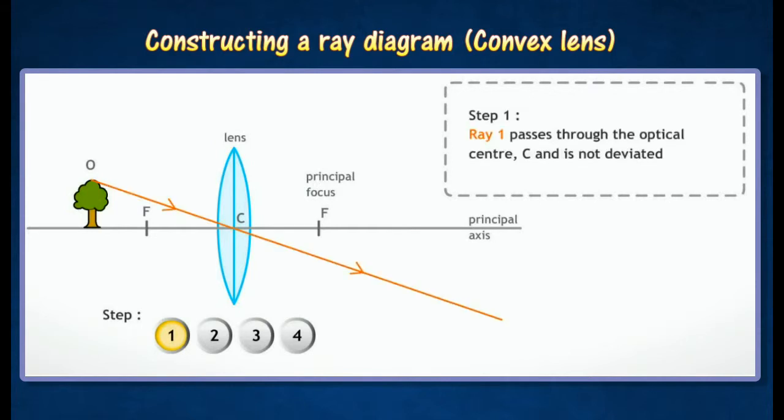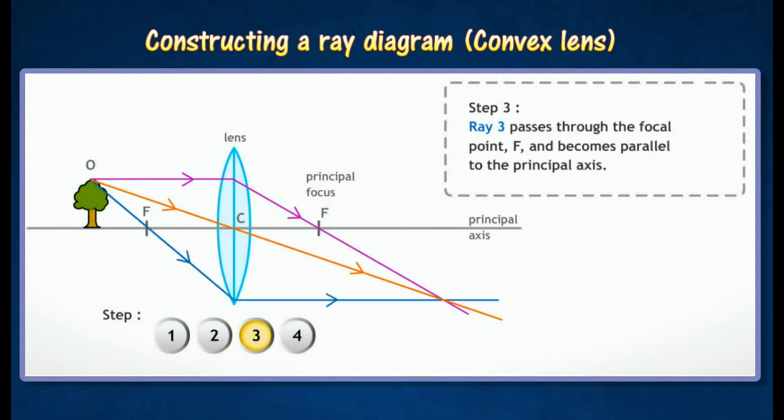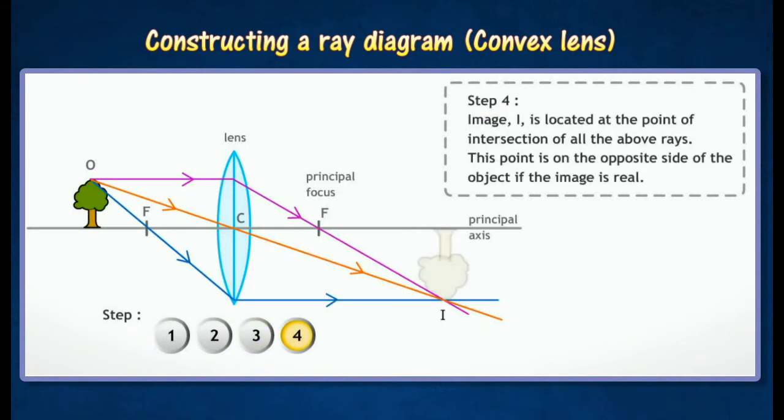A ray of light parallel to the principal axis is refracted and passes through the principal focus F. A ray of light which passes through focus point F is refracted parallel to the principal axis.